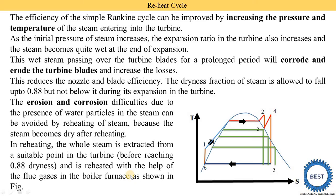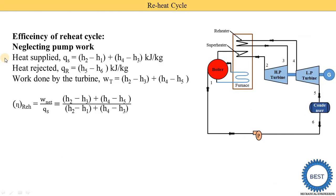Here we are discussing only the two-stage arrangement. But it is also possible to have three stages or four stages. If at the second stage the dryness fraction is still low — say we are achieving 0.80 — then we need to reheat again, meaning we need to provide three or four stages of turbines. Now we find out the efficiency of the reheat cycle.